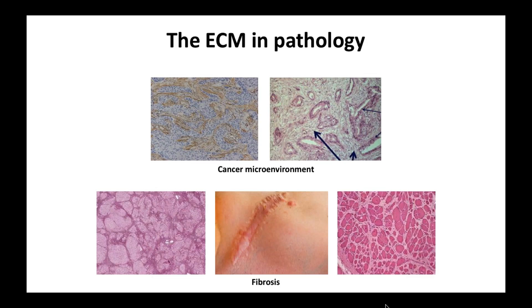The ECM is also critically important in pathology. One example is the tumor microenvironment. This is a pancreatic cancer — the purple structures are the actual cancer, but pancreatic cancer is very desmoplastic, meaning there's a huge matrix component outside the cancer cells. In some cases you can't even find the cancer cells — you just find a big glob of matrix. This breast cancer is stained for Versican, a large proteoglycan, showing a huge matrix component between all the cancer cells. The matrix, even if deposited by non-malignant cells, is an extremely important part of cancer.